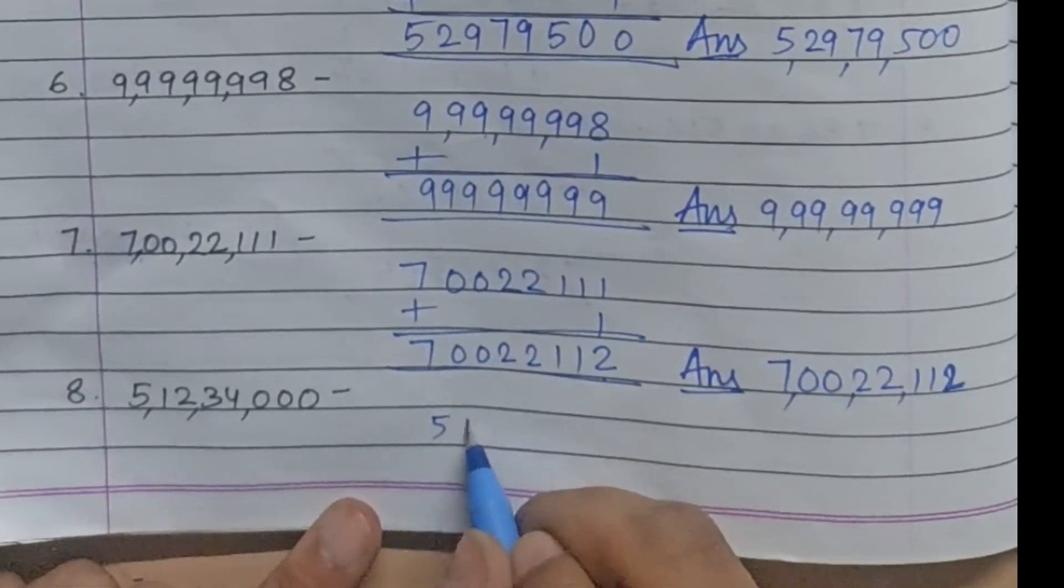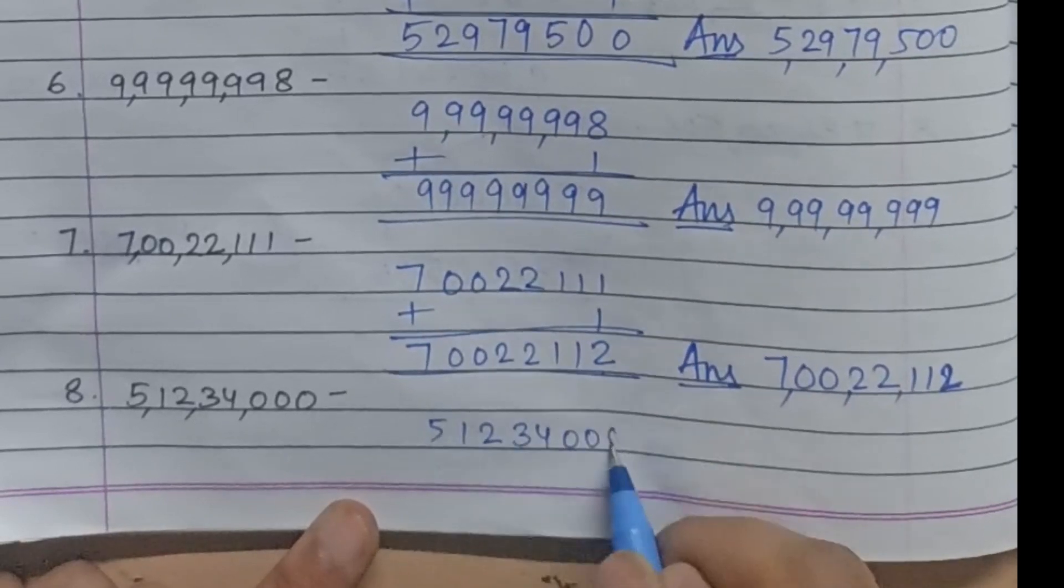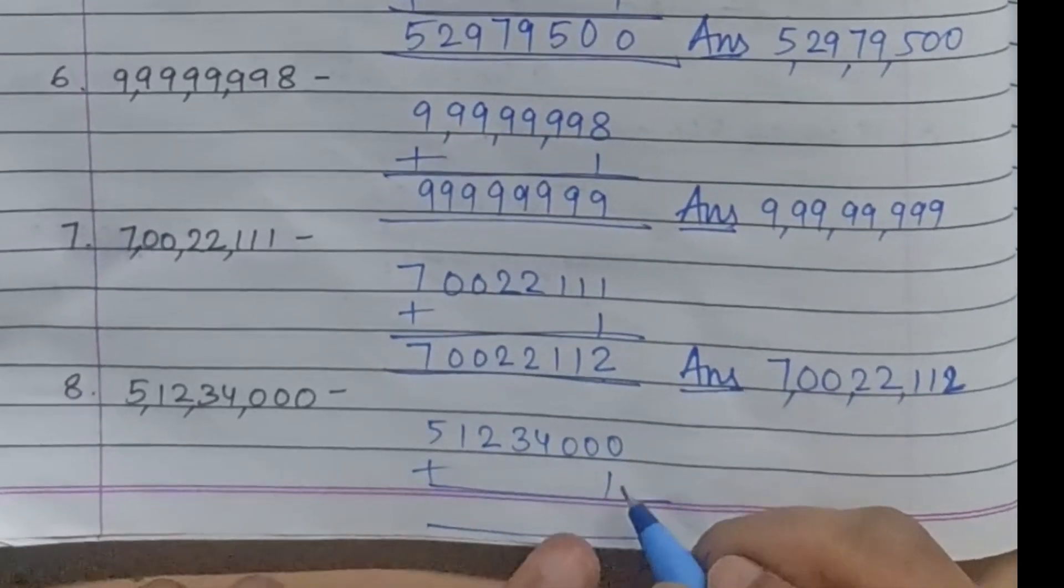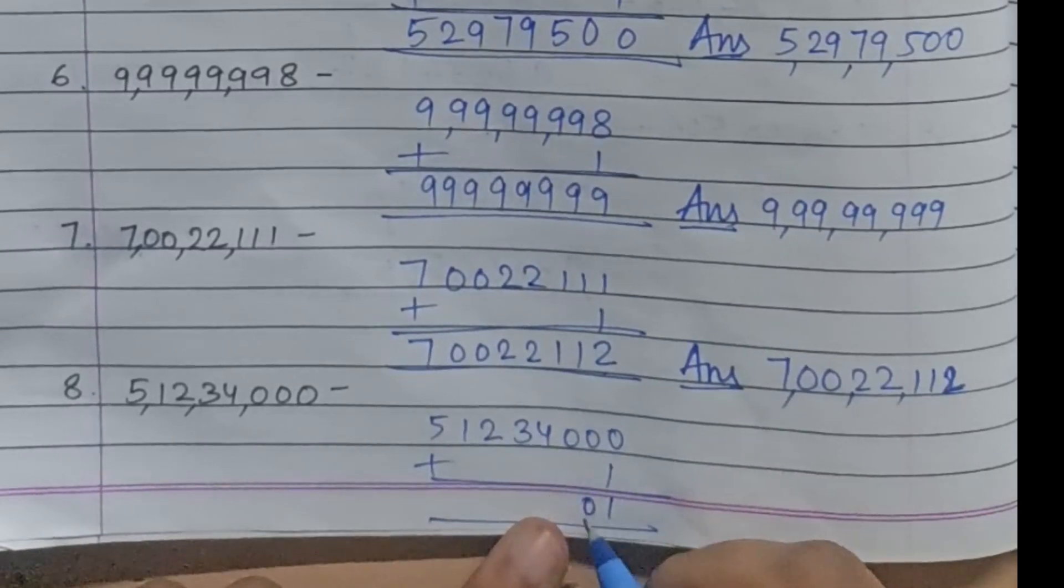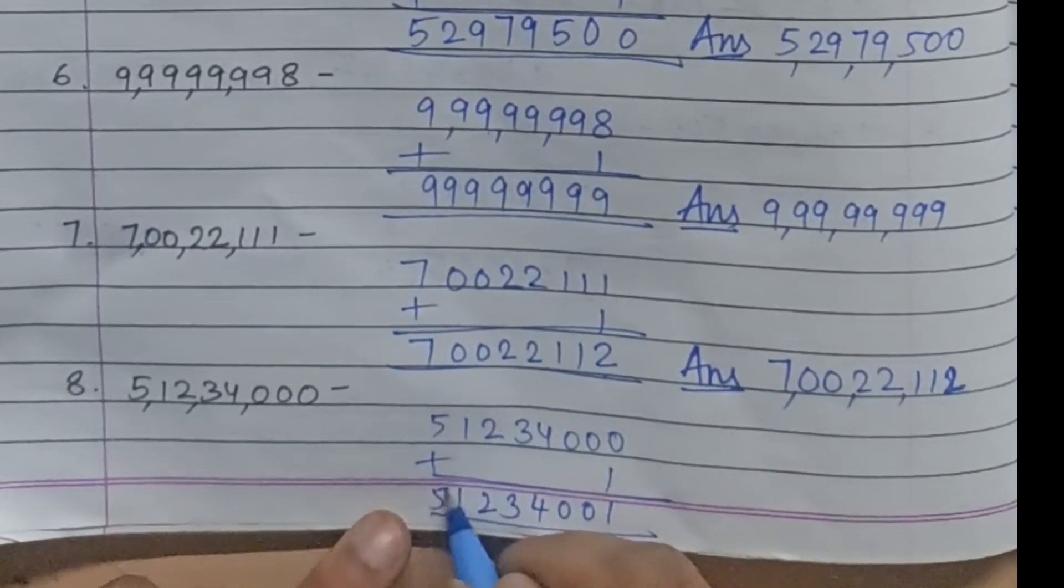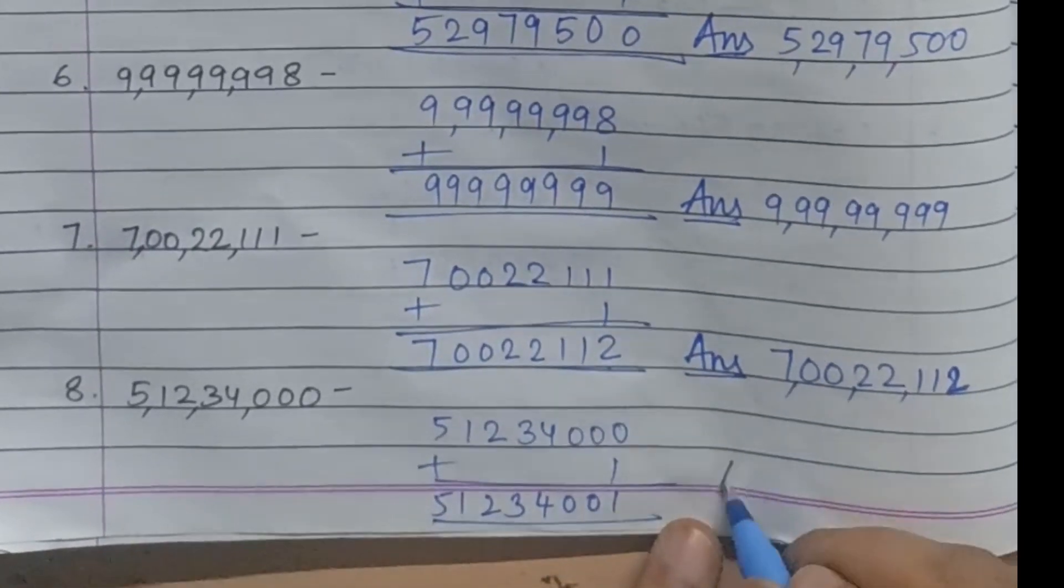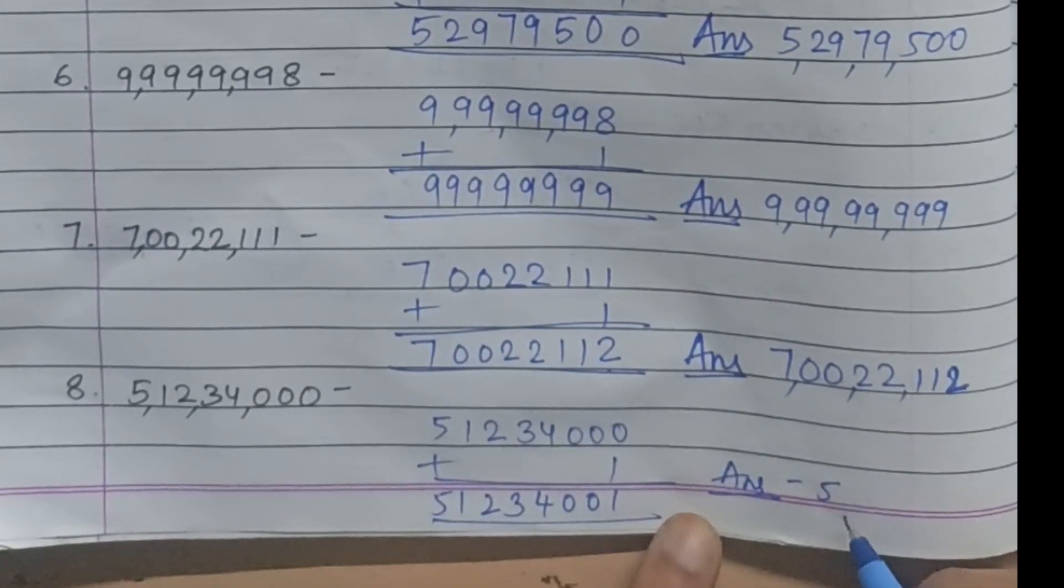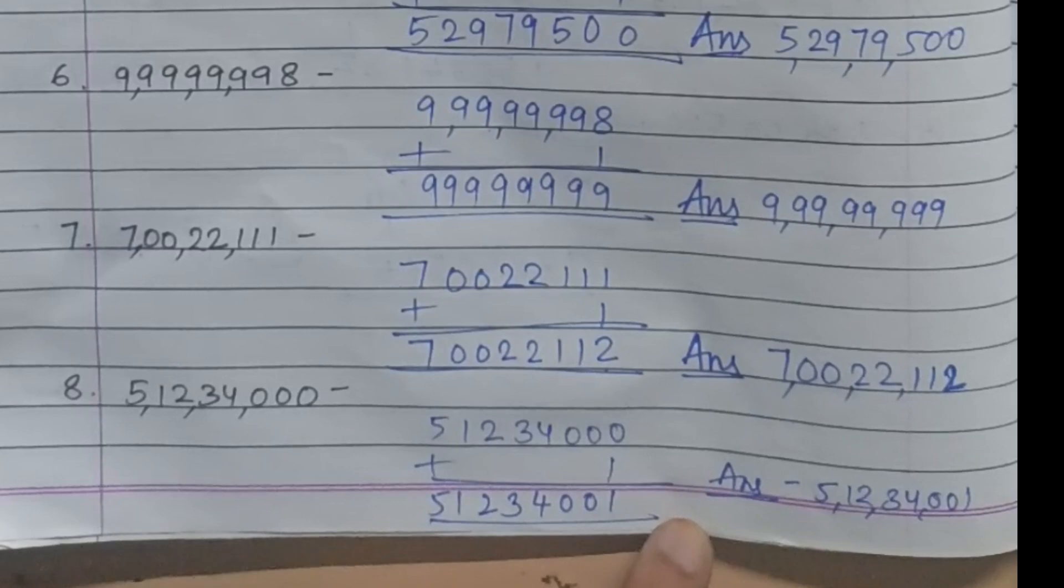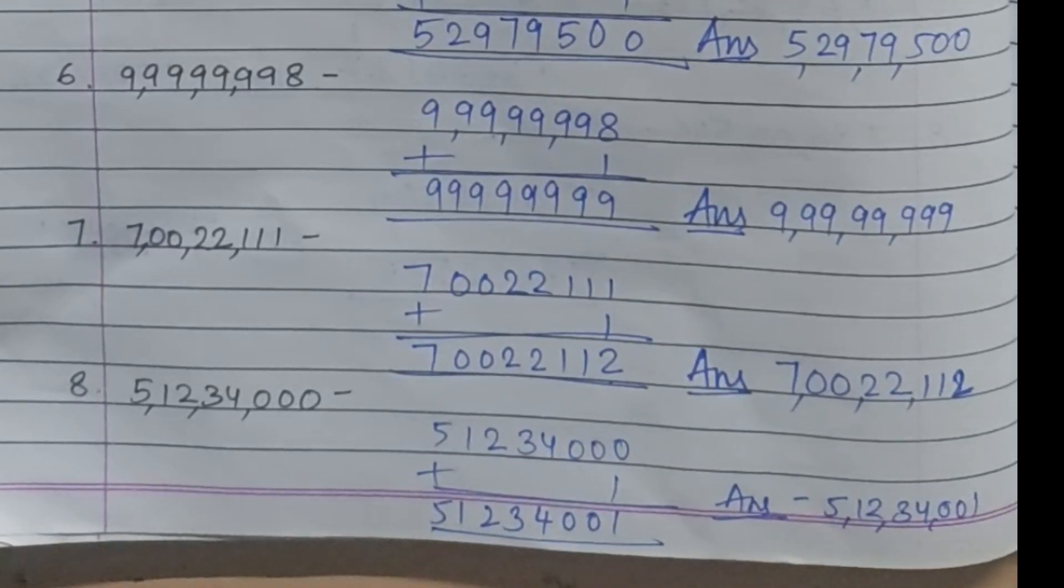Last question: 5,12,34,000. Add 1 to find the successor. 0 plus 1 is 1, then 0, 0, 4, 3, 2, 1, 5. The answer is 5,12,34,001.